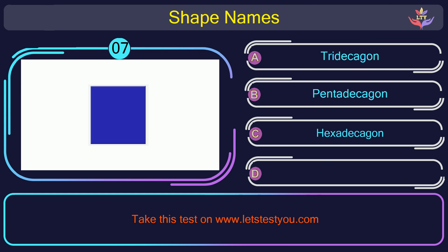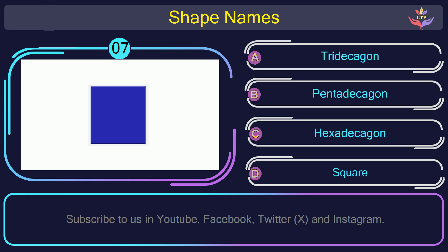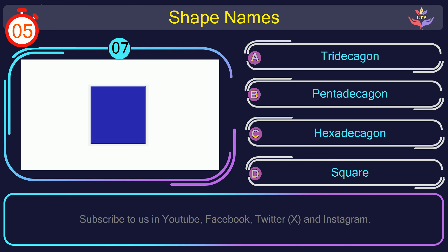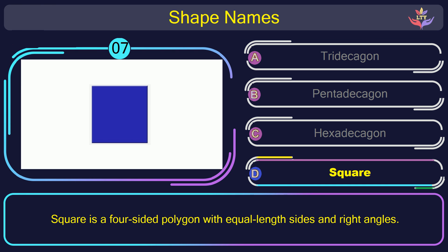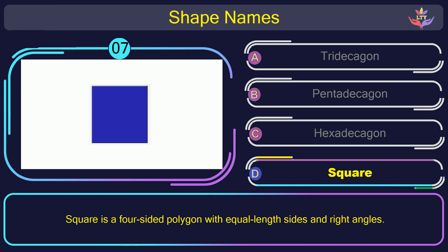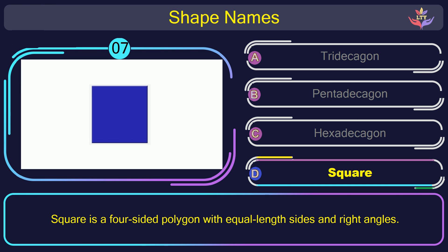Question number 7. Find the name of the shape in this picture. The correct answer is option D. Square. Square is a four-sided polygon with equal length sides and right angles.